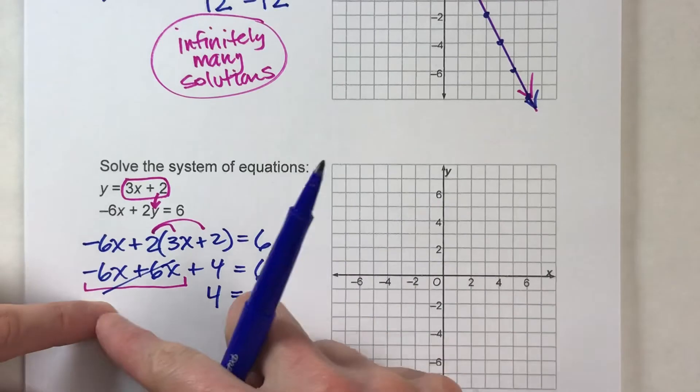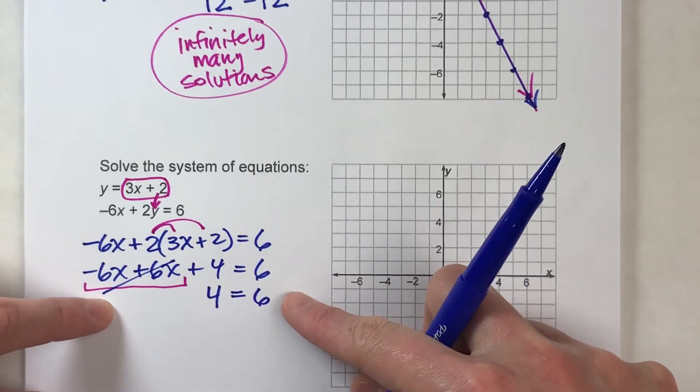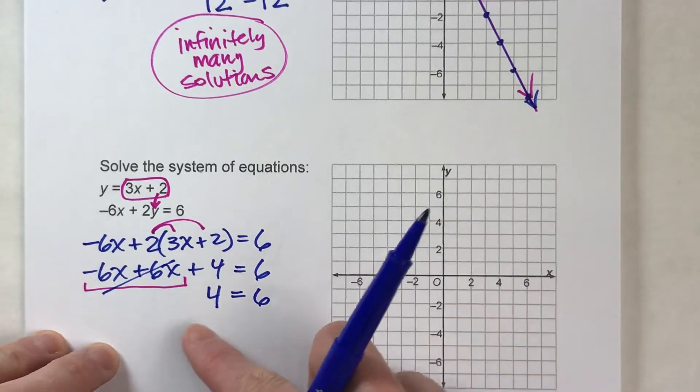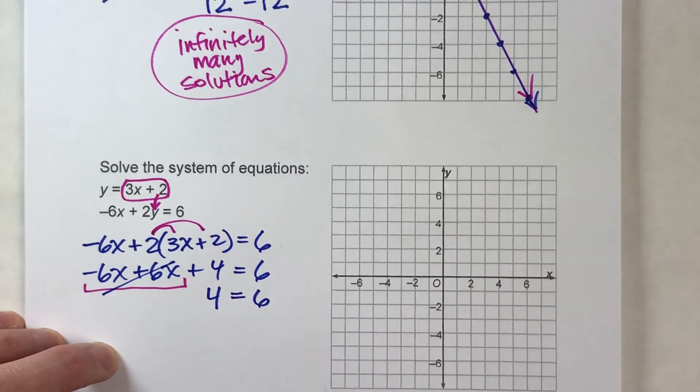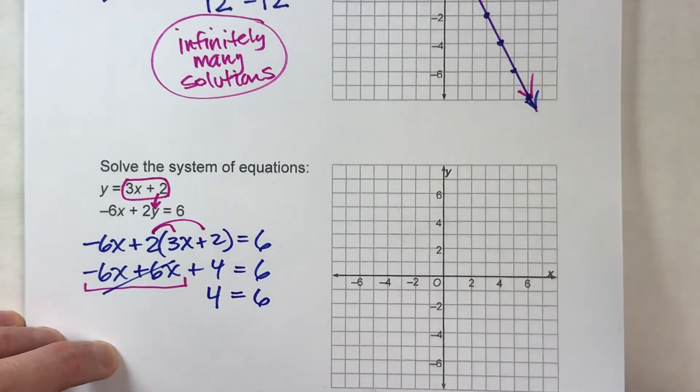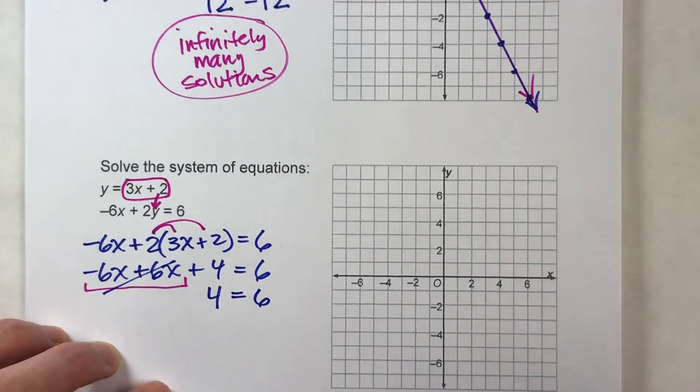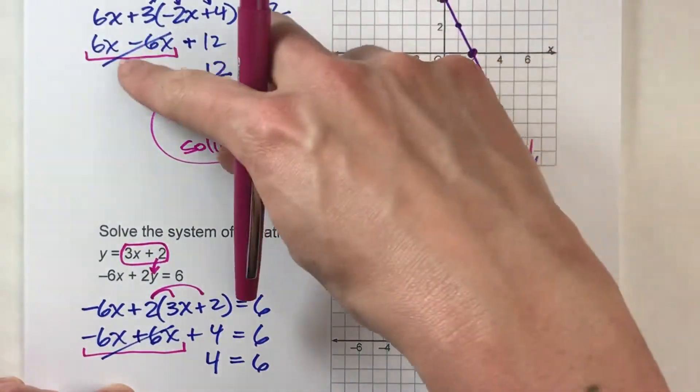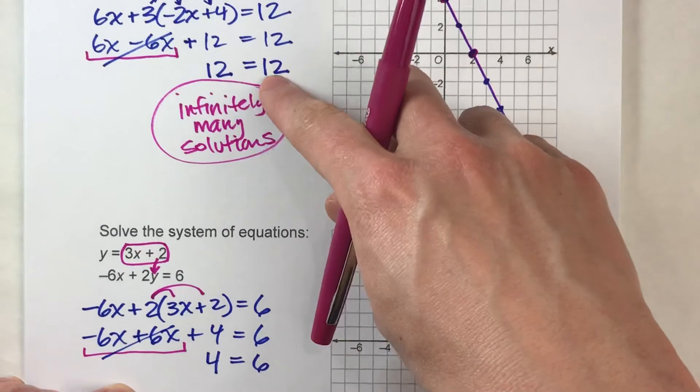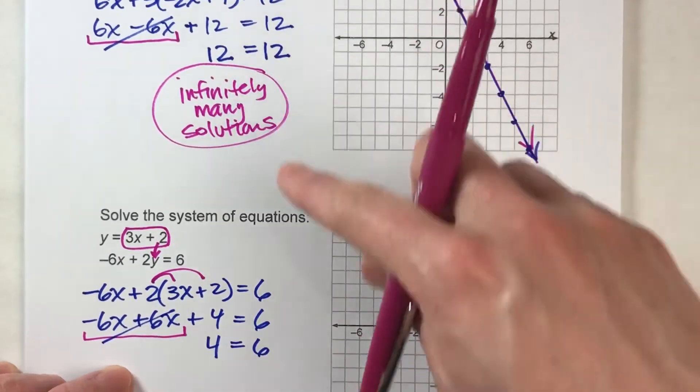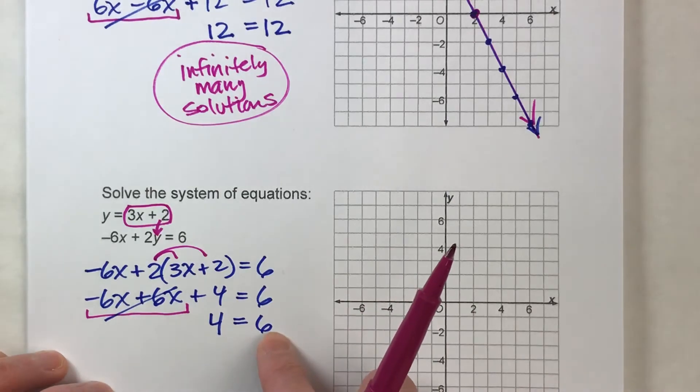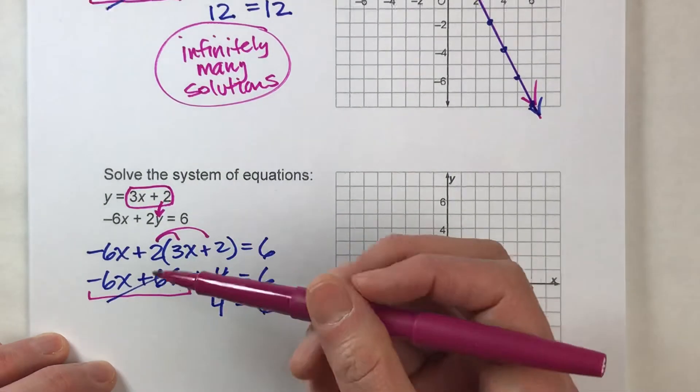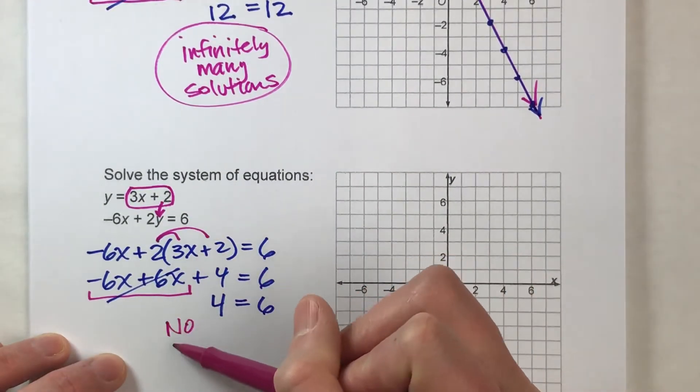I end up with an equation with no variables, just like last time. But this time I get 4 equals 6. Now 4 doesn't equal 6, 4 never equals 6. Whereas before we ended up with an equation with no variables, but 12 equals 12, which is a true statement. Now we end up with an equation with no variables, but a false statement. 4 doesn't equal 6. So what that tells us is there is no solution.